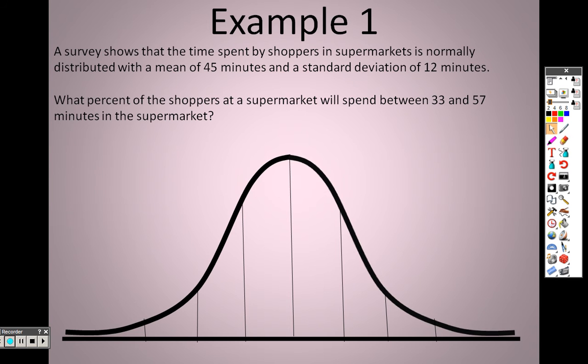Basically here it says you have a survey, and that shows that the time spent by shoppers in a supermarket is normally distributed with a mean of 45 minutes and a standard deviation of 12. Mean meaning the middle. So this is 45 right here in the middle, and then it's saying a standard deviation of 12 minutes.